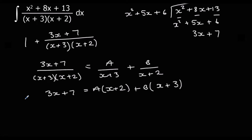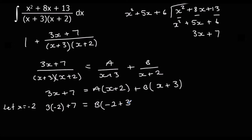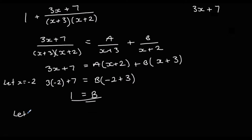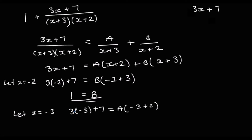We find A and B by substituting values of x. Let x equal negative 2 to get rid of A: 3(-2) plus 7 equals B times (-2 plus 3), giving 1 equals 1b, so B is 1. Then let x equal negative 3 to get rid of B: 3(-3) plus 7 equals A times (-3 plus 2), giving negative 2 equals negative a, so A is 2.